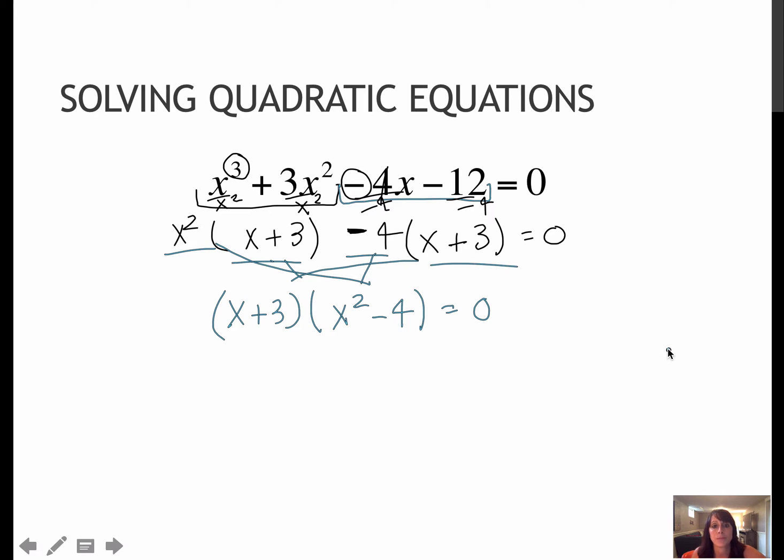These two come together and these two come together. Now whenever I have a degree that's greater than 1, I might be able to continue factoring. This looks like a difference of squares pattern: two terms that are perfect squares being subtracted, which means x plus 3 stays the same. This turns into x plus 2, x minus 2.